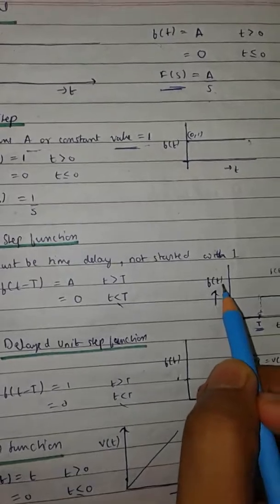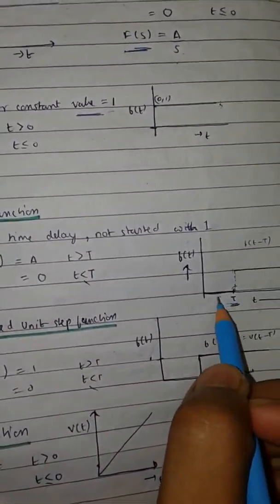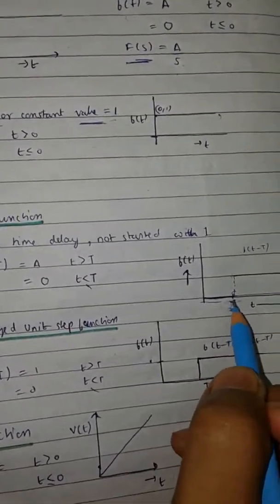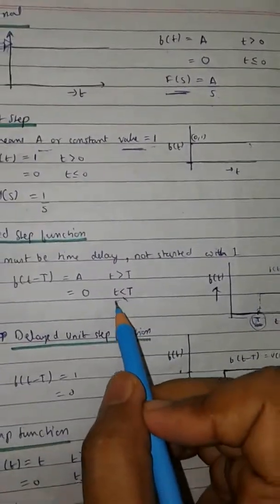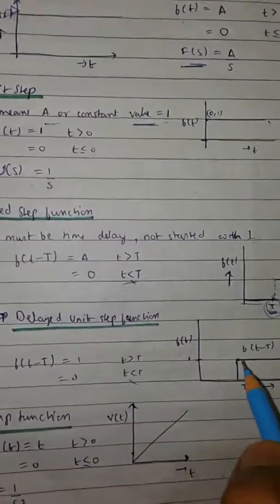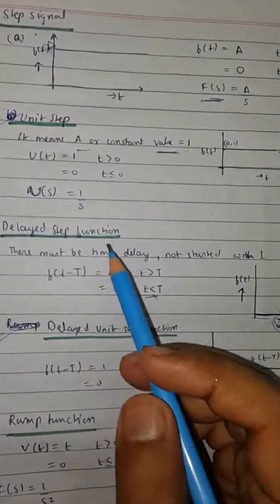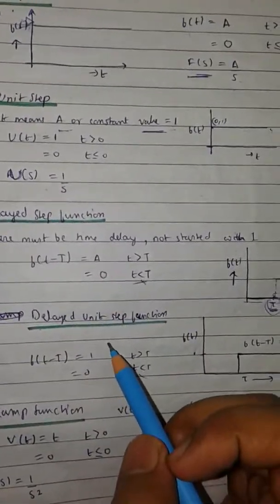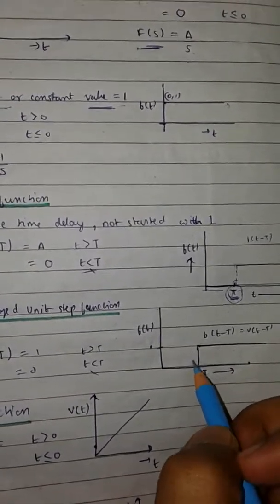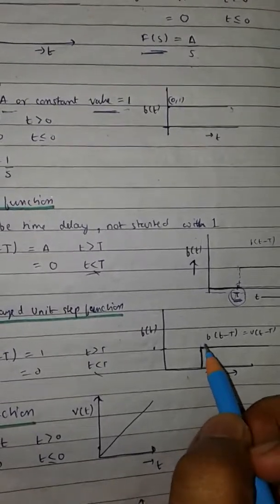Now we have the delayed step function — it means it starts after some interval. As you can see, I have taken that interval as capital T, so it starts after T interval. f(t minus T) equals A, which is the amplitude, for t greater than T, and it is 0 for t less than capital T.